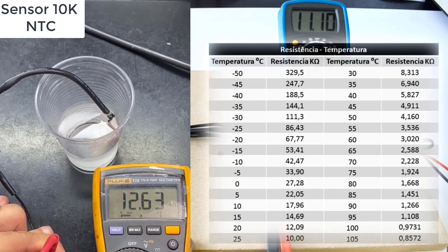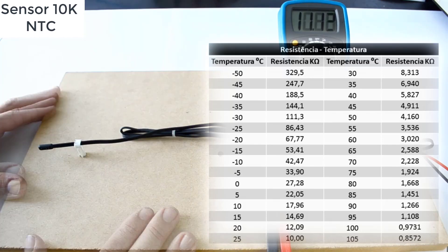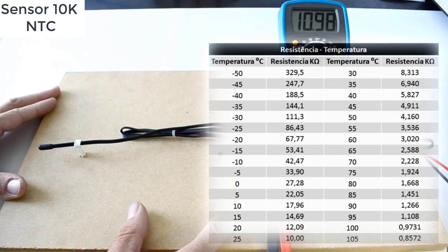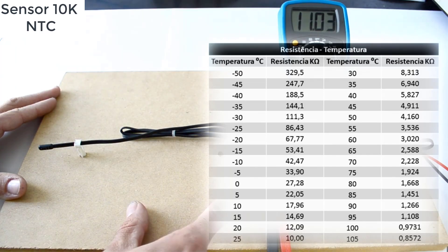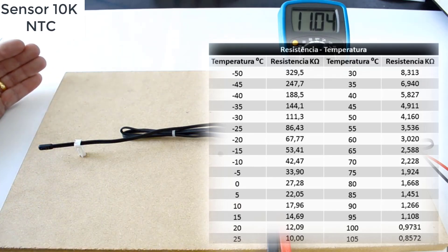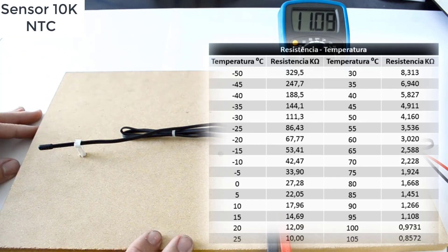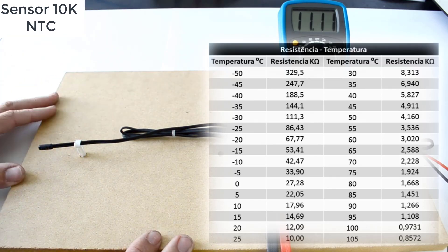In the table, you can see that if the temperature is at 20 degrees it should give 12.09K, and if it is at 15 degrees it should give 14.69K. The values are around these with a variation of 1%. If you are measuring on your equipment and testing a sensor, you should compare the theoretical value with the ambient temperature. If the value is too far off, it indicates that the component is defective.